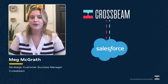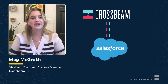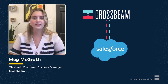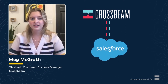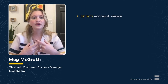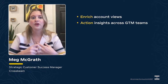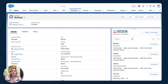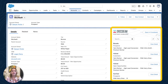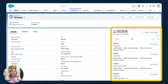So first, I'm going to give you an overview on how to integrate Crossbeam data into Salesforce. Our customers typically want to see Crossbeam data in Salesforce to enrich account views and action insights across their go-to-market teams where they're already working. The first way we do this is through the Crossbeam widget. This helps keep partnerships top of mind for your go-to-market teams by making partnership insights available on the accounts, leads, contacts, and opportunities objects.